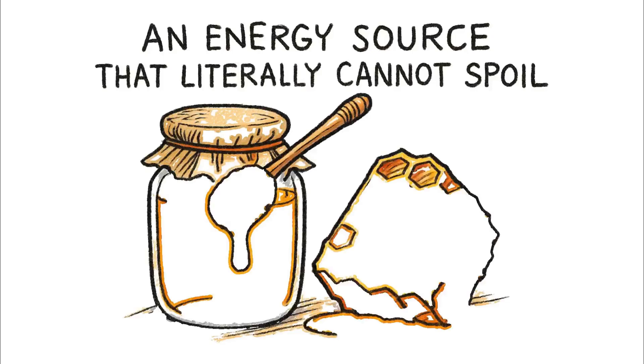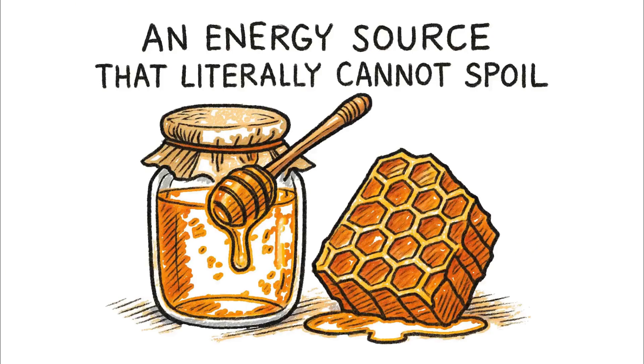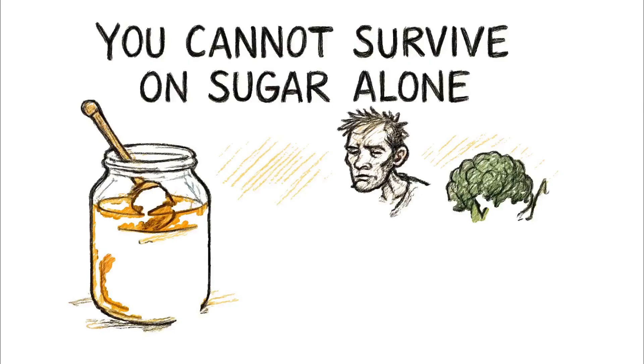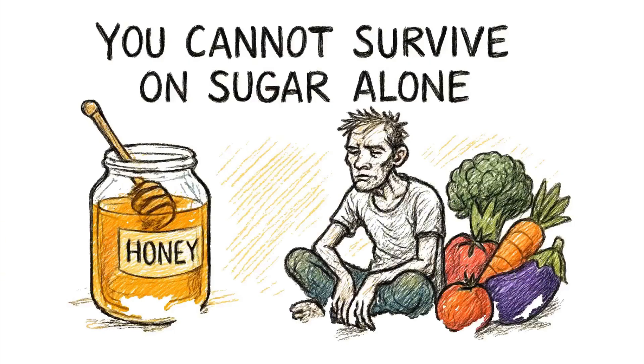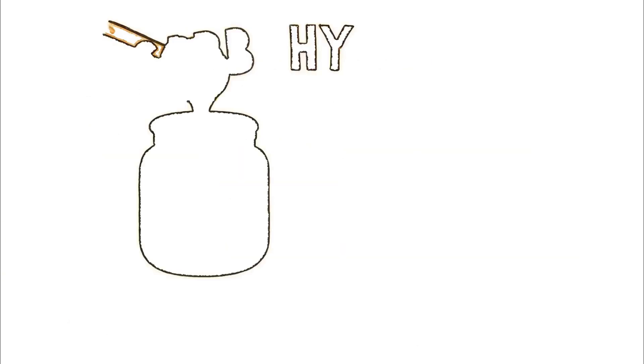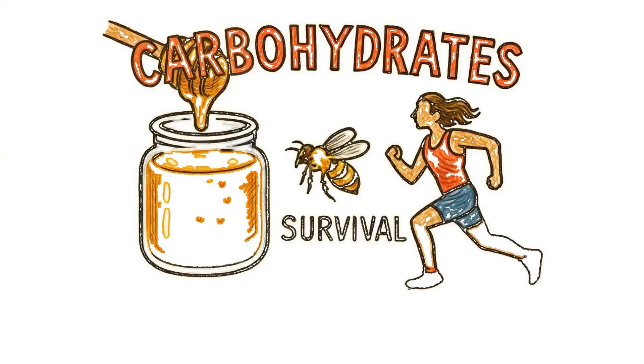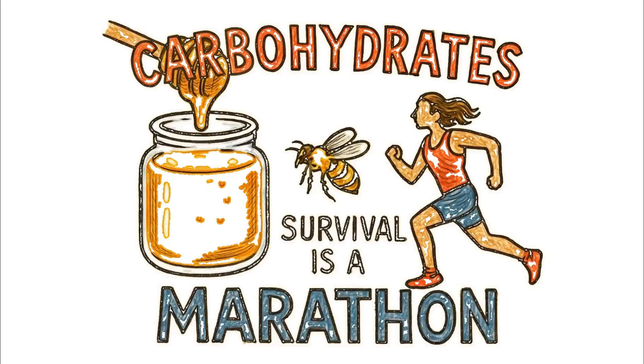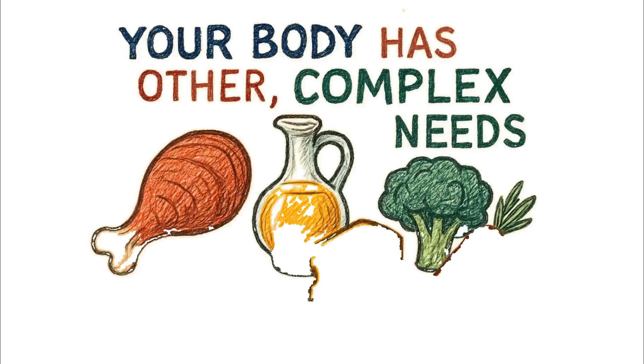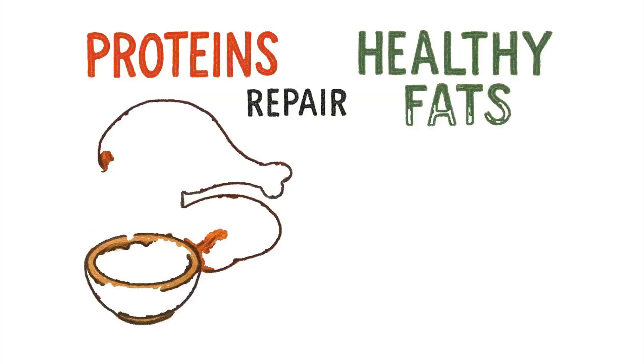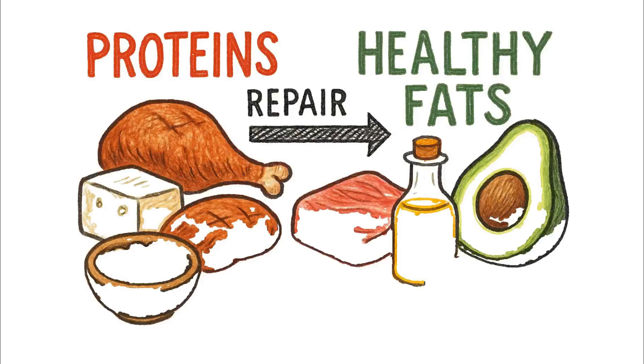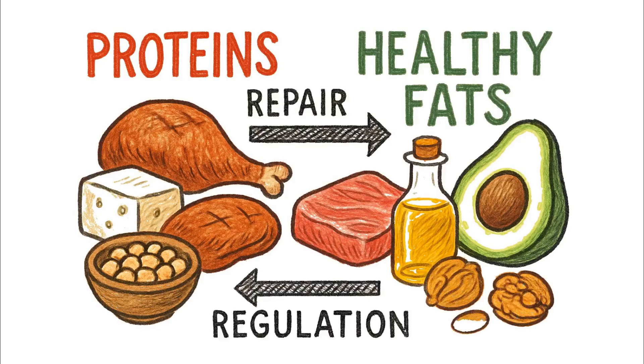So we have our perfect sweetener, an energy source that literally cannot spoil. But you cannot survive on sugar alone, no matter how miraculous its preservation. Honey offers a powerful blast of carbohydrates, essential for quick energy. But survival is a marathon, not a sprint. Your body has other, more complex needs. It requires proteins to repair muscle and tissue, and healthy fats to regulate hormones and absorb vitamins.